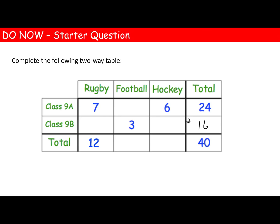How many people in class A played football? Well, seven plus six is 13, and 24 subtract 13 is 11. How many people played football in total? Well, 11 plus 3 is 14.